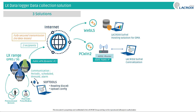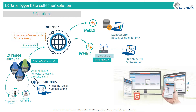The second solution is PCWin2, the centralization software. On PCWin2, you have centralized alarm reporting via SMS or email, automatic calculations such as average flows, balances, and formulas. You also have curve plotting, graphical mimic diagrams, and operating reports in Excel format.